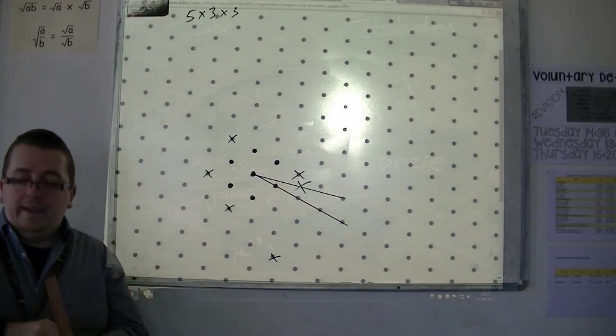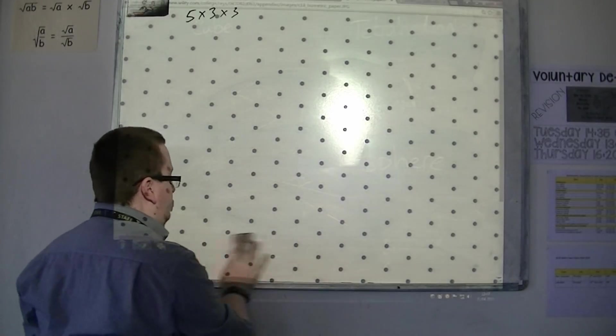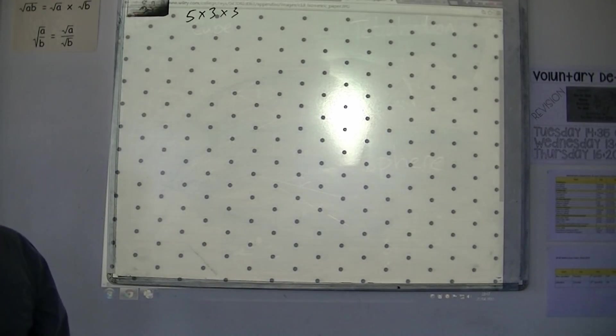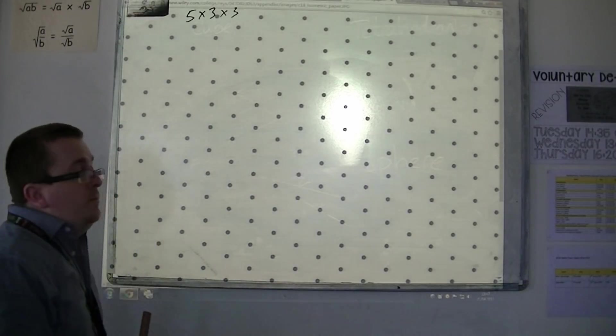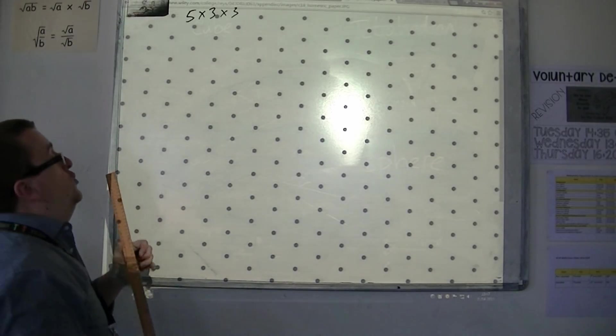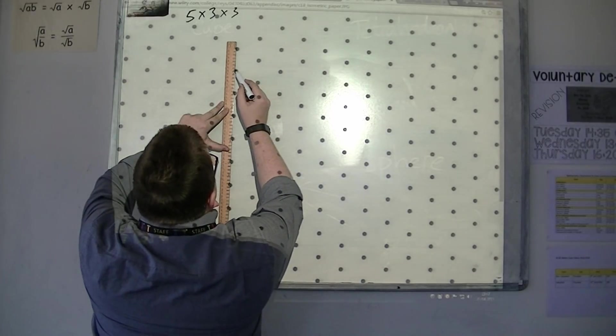So, that is really the key rule on how to use isometric paper. So, I'm drawing this rectangle, 5 by 3 by 3. So, I'm going to start off by drawing the height of the shape.